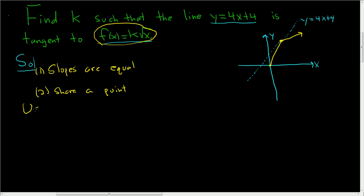So let's use condition 1 first. So what does it mean for the slopes to be equal? Well, the slope of this line is 4. And the slope, loosely speaking, the slope of this function is the derivative. So we'll first find the derivative of our function.